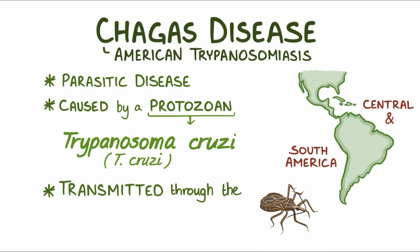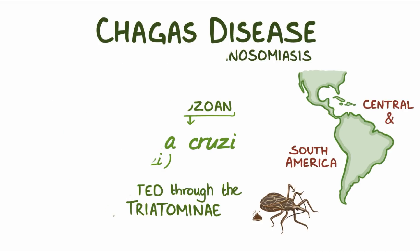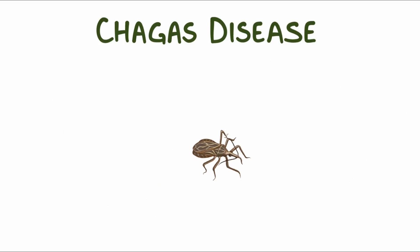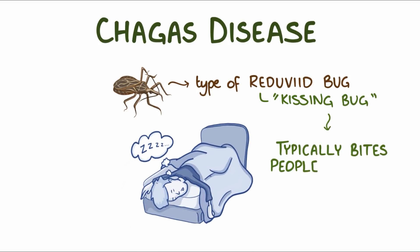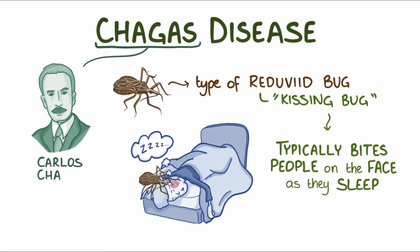T. cruzi is transmitted through the feces of the insect triatomine. Triatomine is a type of reduviid bug, also called the kissing bug because it typically bites people on the face as they sleep at night. The disease gets its name from Carlos Chagas, the physician who first described it.